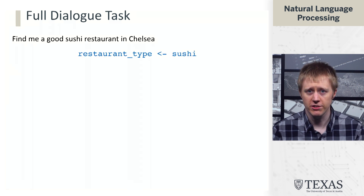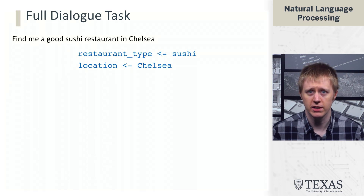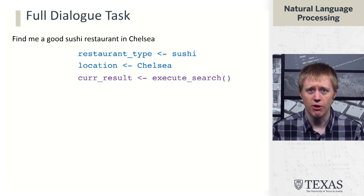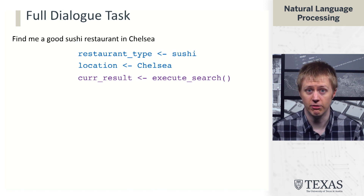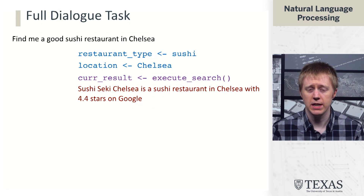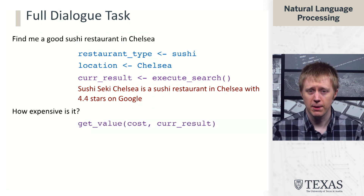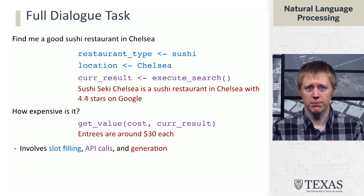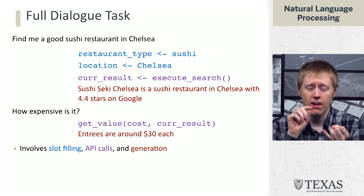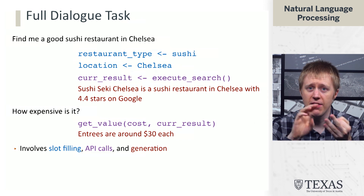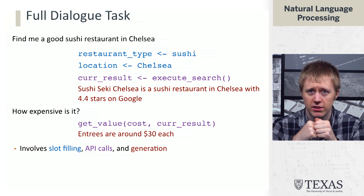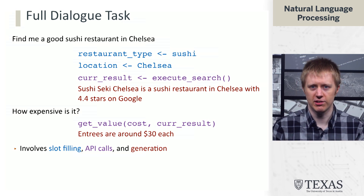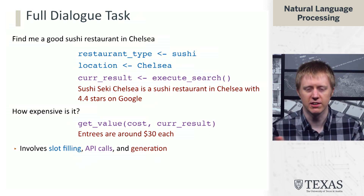So what is really going on in the back end? When you say 'find me a good sushi restaurant in Chelsea,' there are a couple of different things. First is the slot-filling idea: we figure out we want a sushi restaurant and we want it in Chelsea. Then we need to actually invoke an API — execute some kind of search — which obviously didn't exist in the chatbot world. Then we need to generate a response. When the user asks how expensive it is, we do some other query and return a response. This combines intent classification and slot filling with dispatching to an API and generating a response rendered to the user. Often this generation is templated, which is why these systems use the same kind of phrasing for different queries.